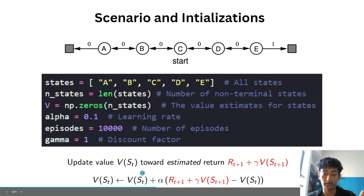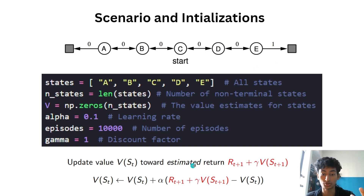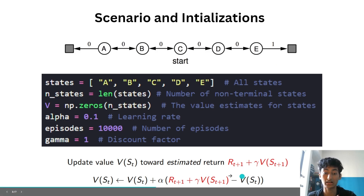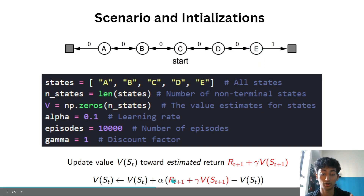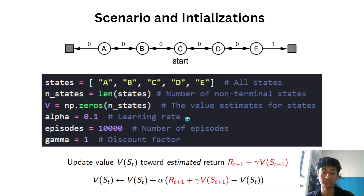For example, if you are on state E — V(E) — the value starts at zero. If you go from E to the terminal state, the update is: V(E) = 0 + 0.1 * (1 + gamma * 0 - 0) = 0.1, because the terminal state's value is always zero. So after the first episode where the agent reaches that terminal state, V(E) becomes 0.1. Run this 10,000 times and you get approximately the correct value estimates for all states.